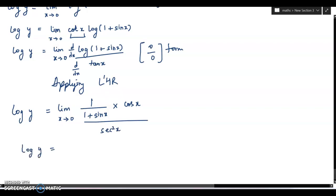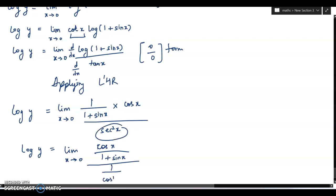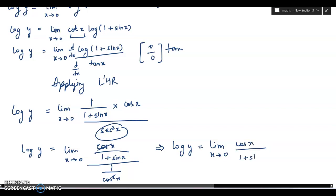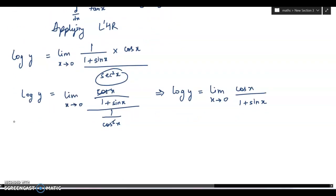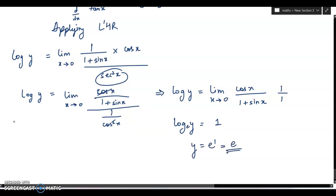Log y equals limit x tends to 0 of cos x divided by (1 plus sin x), all divided by 1 by cos squared x, giving cos x times cos x over (1 plus sin x). So log y equals limit x tends to 0 of cos x divided by (1 plus sin x). Putting x equals 0: cos 0 is 1, divided by 1 plus sin 0, which is 1. So log y equals 1, and y equals e to the power 1, which is e. This is the answer.